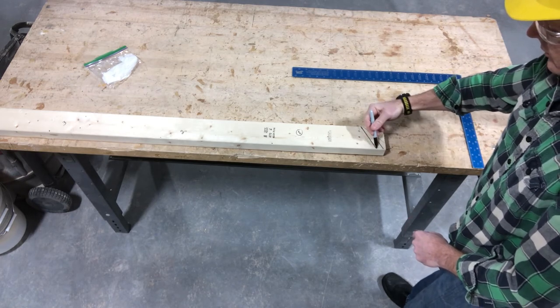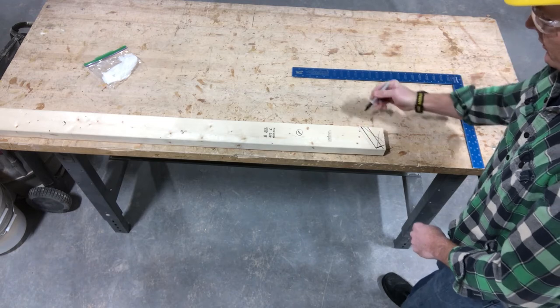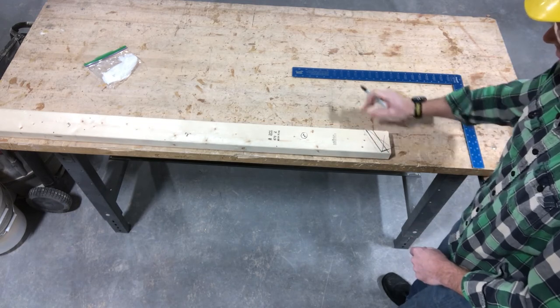This right here is my ridge. So this will be cut out later. The ridge will come across square like that and down. So that's gone, cut out.